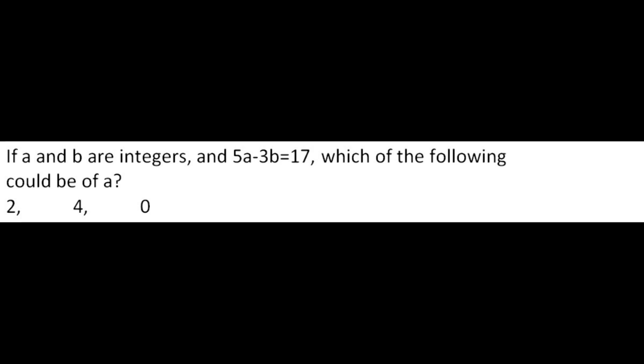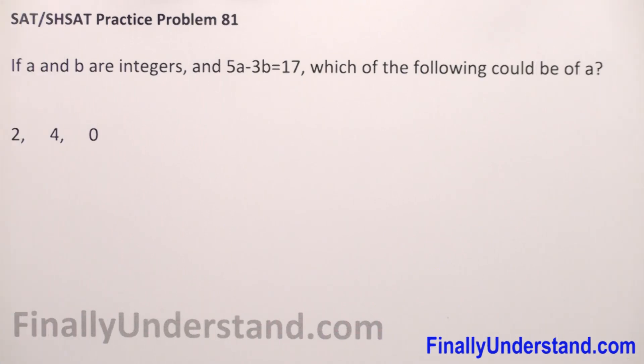If a and b are integers and 5a minus 3b equals 17, which of the following could be the value of a? The options are 2, 4, or 0.